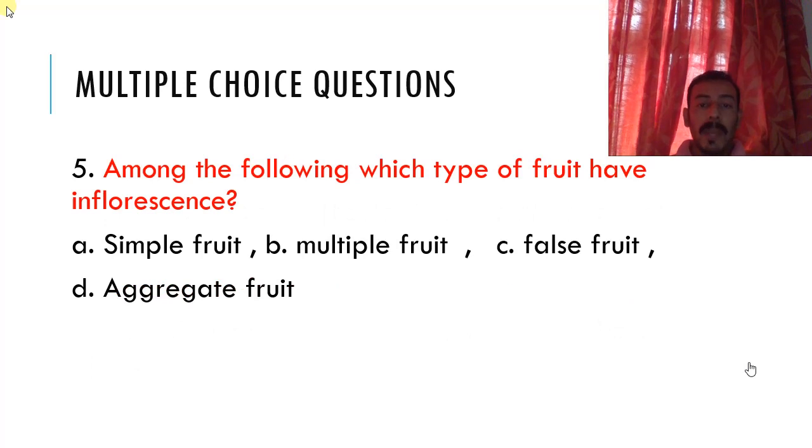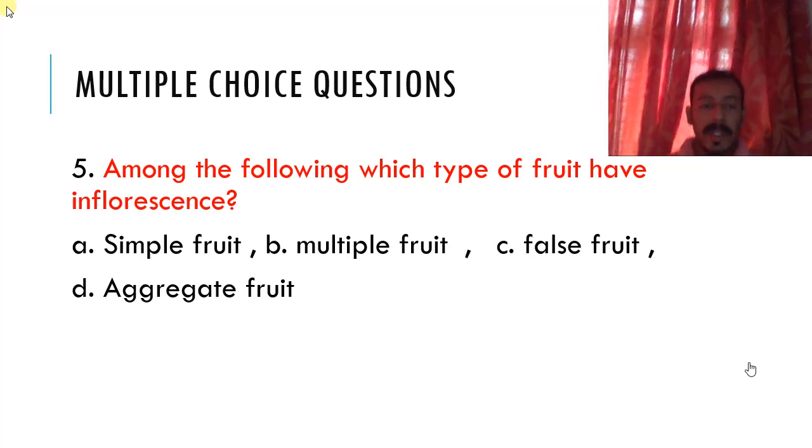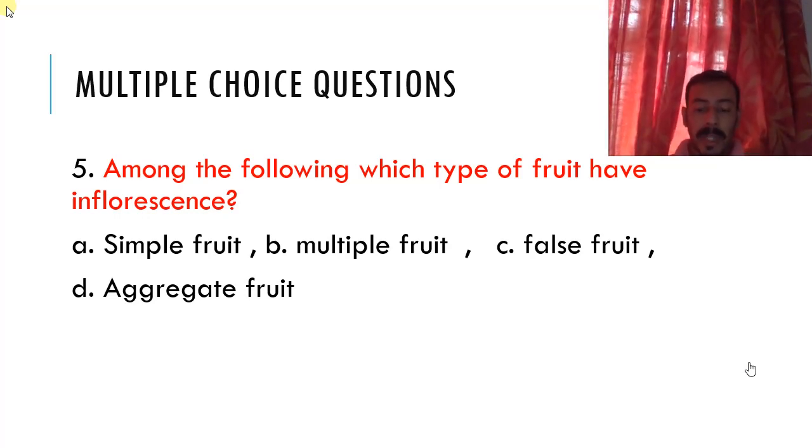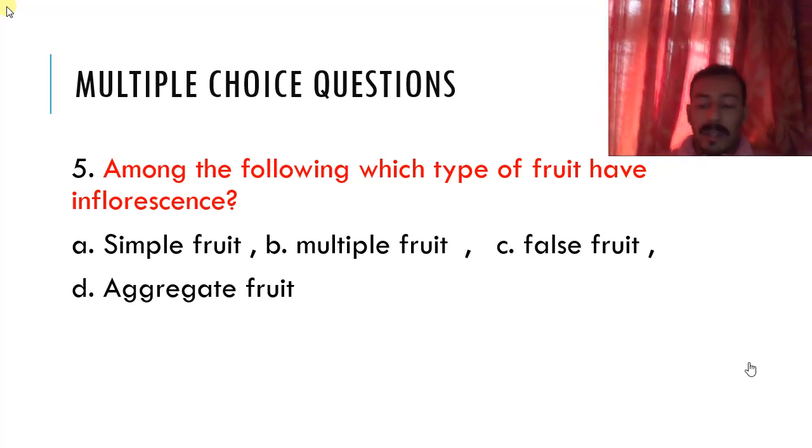So the final question. Among the following which type of fruit have inflorescence? So we talked about inflorescence. Which of this fruit takes with inflorescence? Simple fruit, multiple fruit, false fruit, aggregate fruit. Our answer is done. Okay. Put your evidence. Now, let's see the answers.